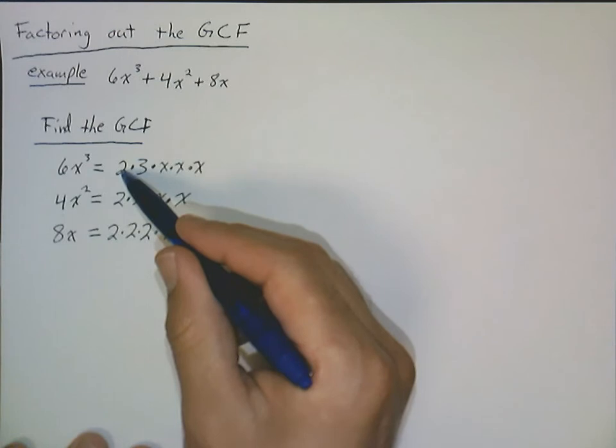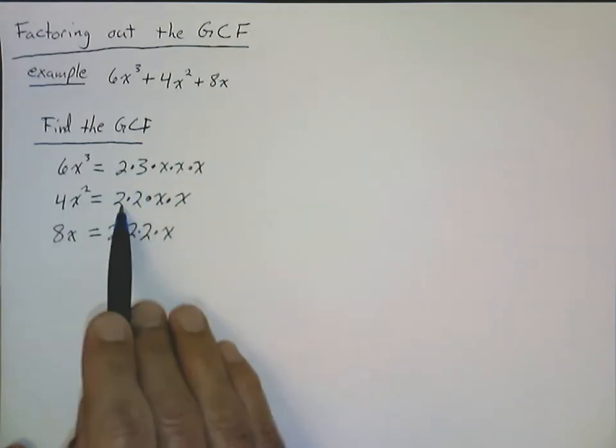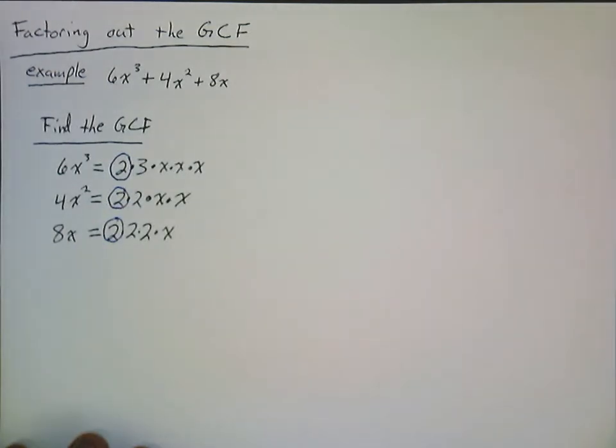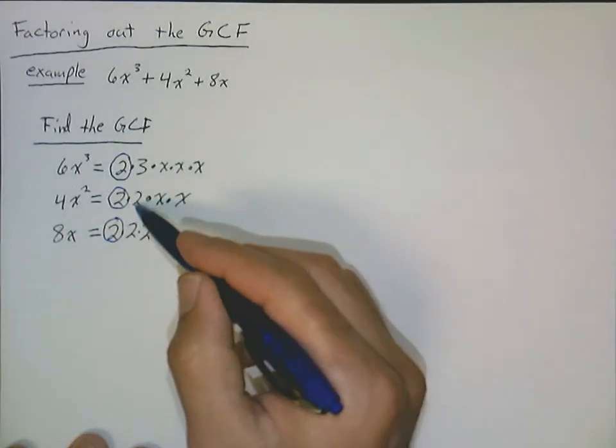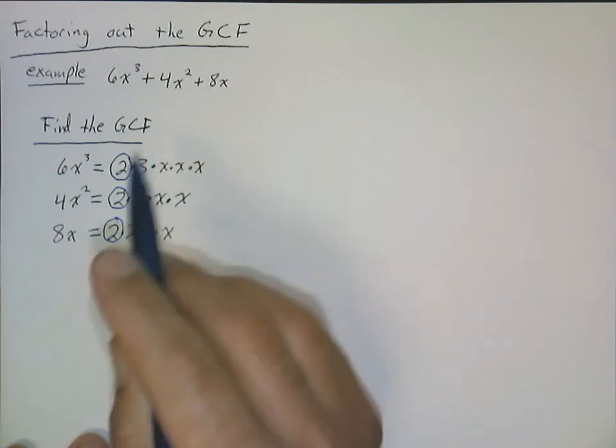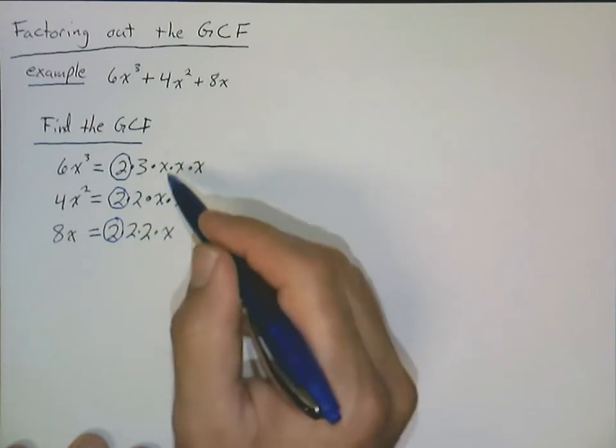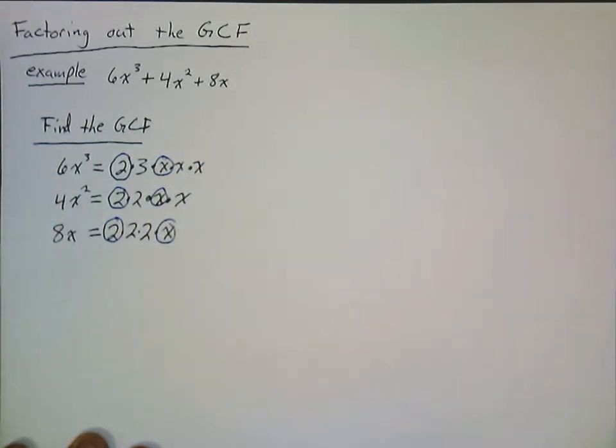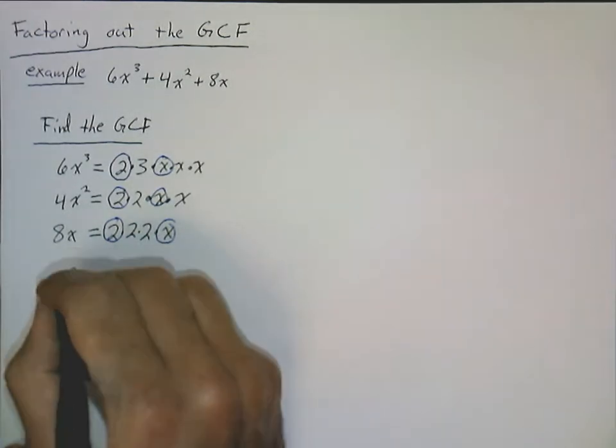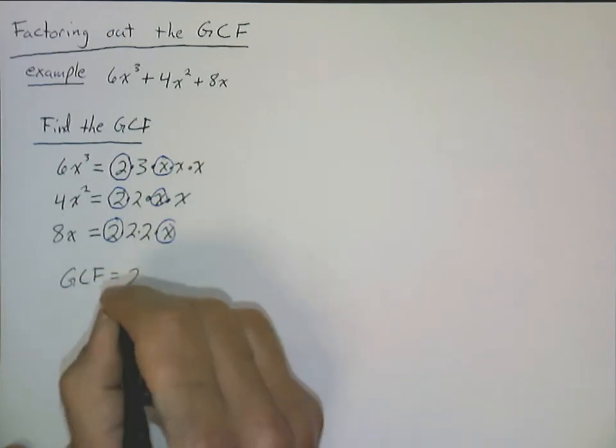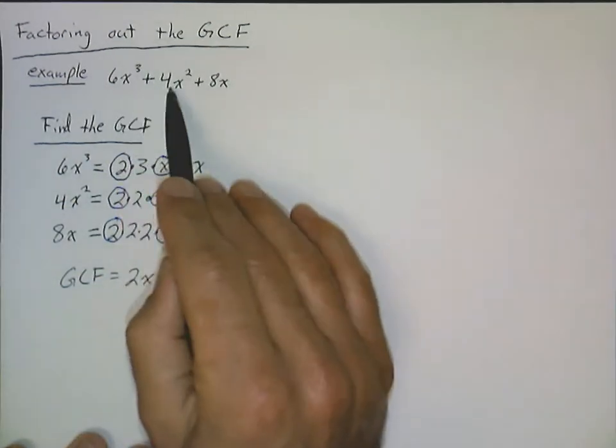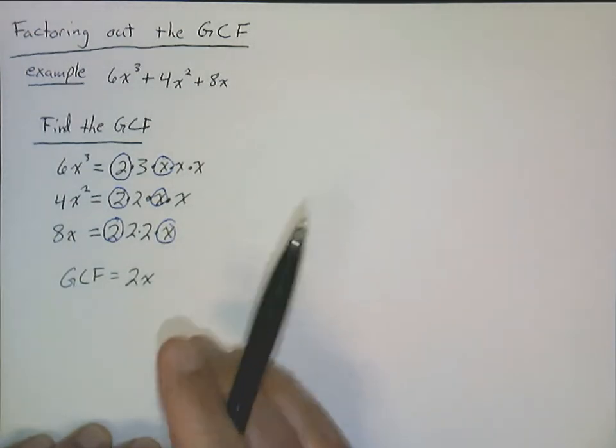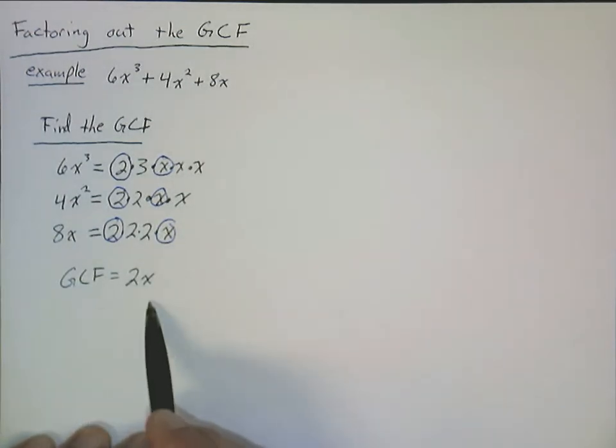So now what we want to do is identify the common factors in all of the terms. So we notice here 6x cubed contained a factor of 2. So did 4x squared. And so did 8x. So we could circle those saying that they each have a 2 in them. These two have another factor of 2, but there isn't another factor of 2 up here. So we don't have any other numerical common factors. But notice that each of them has a factor of x in it. And so the factors that all terms share, that is going to be the GCF. So here the GCF is just 2 times x. So each of these terms has a factor of 2x in it. And that's the biggest factor that all three terms have. So now what we're going to do is we're going to factor out this common factor. Basically we're going to undistribute it.